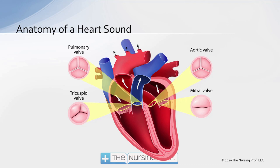The blood goes through the lungs, comes back to the heart, and enters the left atria over on the right side of your screen. The left atria contracts and pumps the blood down into the left ventricle through the mitral valve. Then the left ventricle contracts and pushes the blood out the aorta through the aortic valve. So the atria contract, and the valves between the atria and ventricle — the tricuspid and the mitral — close, starting our heart sound cycle. Then the ventricles contract and the aortic and pulmonic valves close.